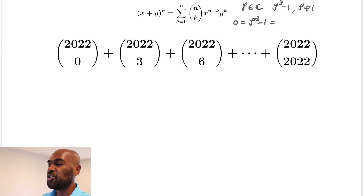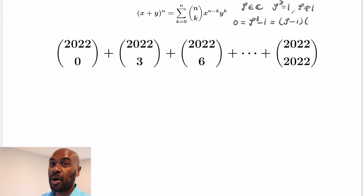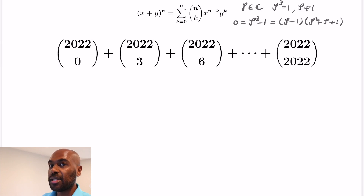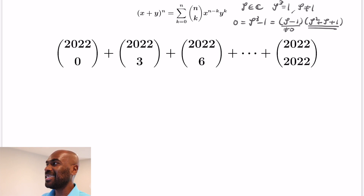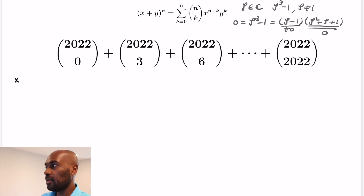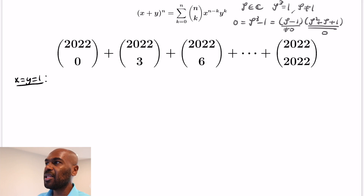So zeta cubed minus 1 equals 0, which we can factor as zeta minus 1 times the quantity zeta squared plus zeta plus 1. Since zeta was chosen to not be 1, that means zeta squared plus zeta plus 1 equals 0. We're going to use this by substituting values into the binomial theorem to get the expression we want.